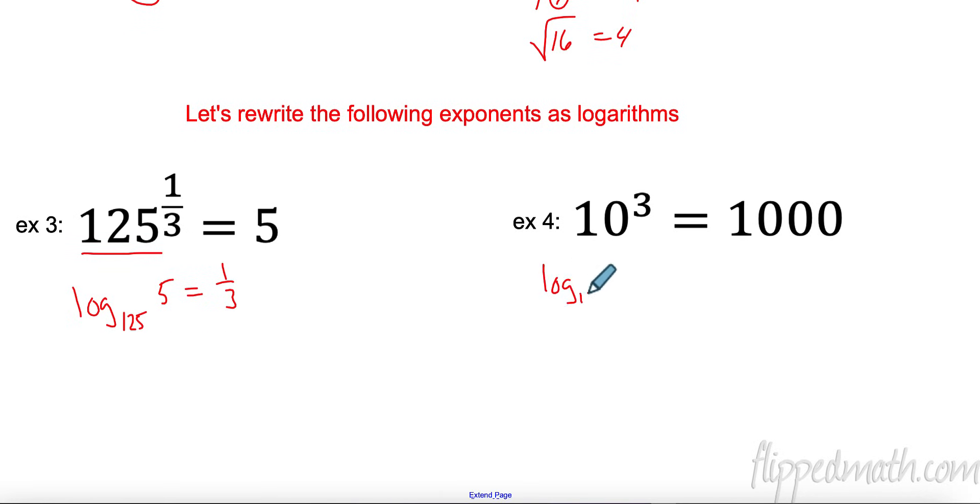I have log base 10 of 1,000 equals 3. Now, this is very important. This is called the common log, and that is base 10. Any time we are base 10, we don't write this base 10. We just write log of 1,000 equals 3. That's very important. Don't let me see you writing this log base 10. This is like saying x. I don't write the 1x. It's the same thing. Log base 10. Any time I have base 10, that's a common log.